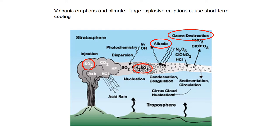Sulphur dioxide reacts quite rapidly with water in the atmosphere — and there's lots of water — forming sulphuric acid, H2SO4. Some photochemistry helps too. One of sulphuric acid's key physical properties is that it has a really high boiling point, so it really doesn't like to be in the gas phase. What happens is that sulphuric acid rapidly condenses out into really small droplets — basically droplets of sulphuric acid coming out of our volcano.